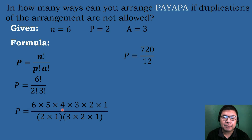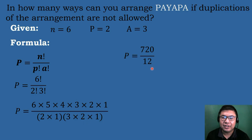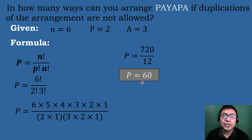6 factorial equals 720, and 2 times 1 times 3 times 2 times 1 equals 12. Dividing 720 by 12 equals 60. Therefore, there are 60 possible ways we can arrange 'payapa' if duplications of the arrangement are not allowed.